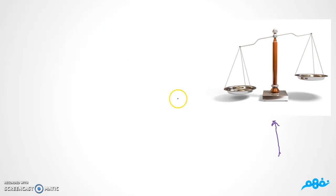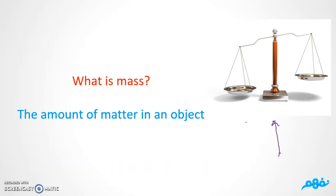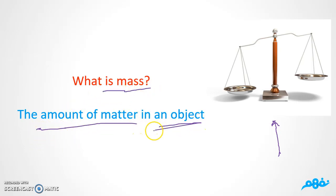I would like you to look at this picture — you can see a balance here. I have a balance because I would like to ask: what is mass? When I ask you this question, you have to think about what you studied before. Mass is the amount of matter in one object.